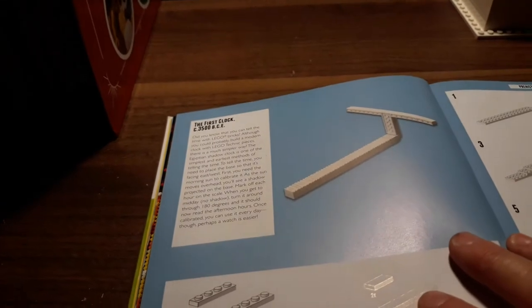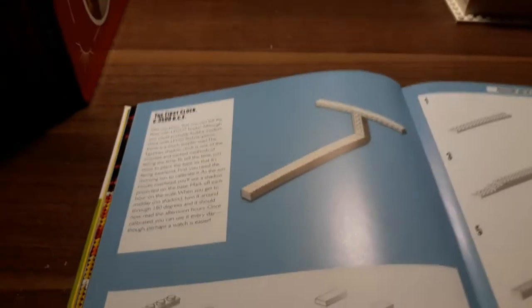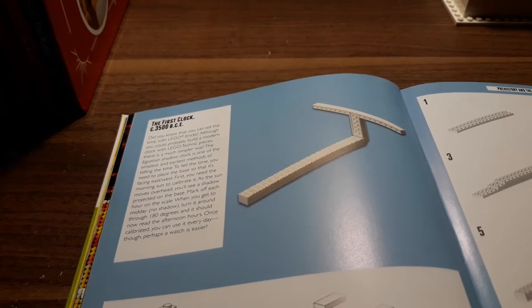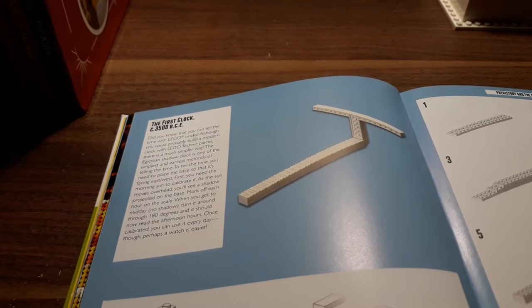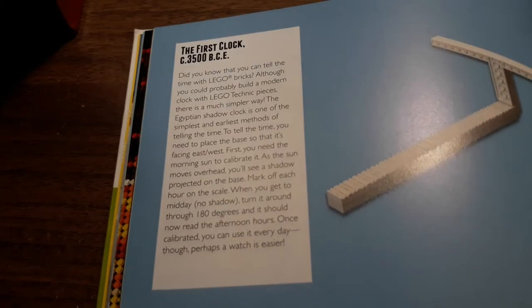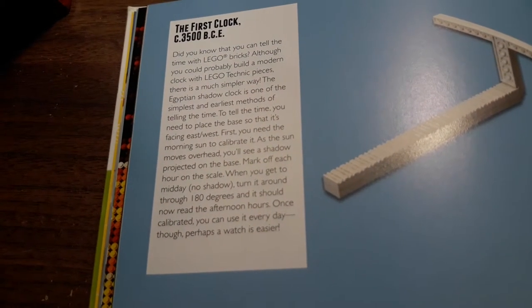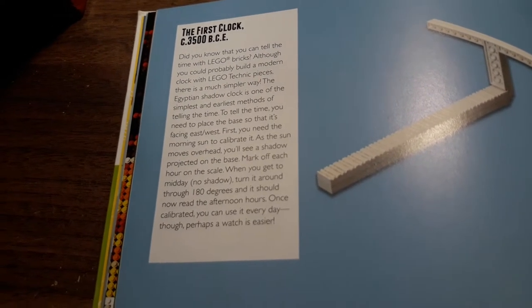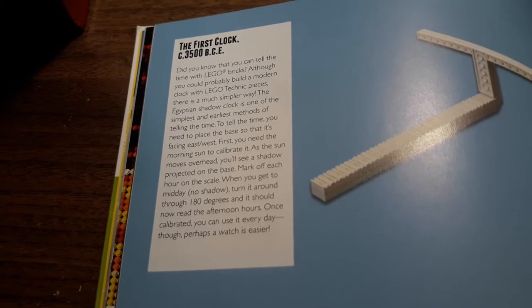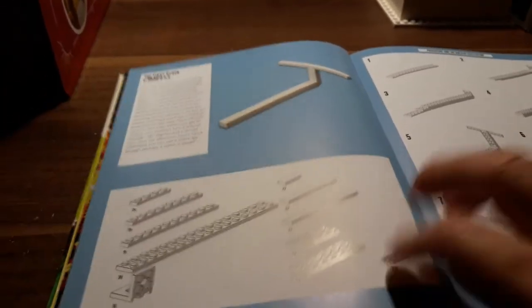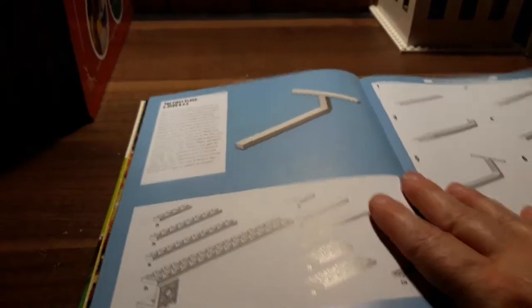So today we're going to build something that they have in here called the First Clock, which is the Egyptian Shadow Clock. It's one of the simplest and early methods of telling time. You have to place it so it's facing east-west and then calibrate it for the sun, but it looks really cool. So yeah, I figured this would be one of the easiest things, and maybe you guys can build it with me and show me your version of this.